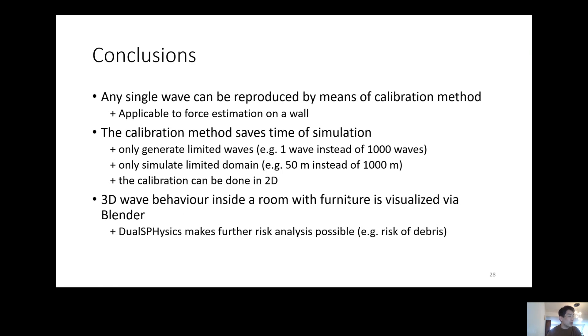The third point is that 3D wave behavior inside the room with furniture is visualized via Blender. There's a big benefit that DualSPHysics makes further risk analysis possible. For example, the risk of debris, in our case furniture moving. And if people are inside the room, it can be a big risk for the people. So we can also discuss the risk by such kind of visualization. This is the end of the presentation. Thank you very much.